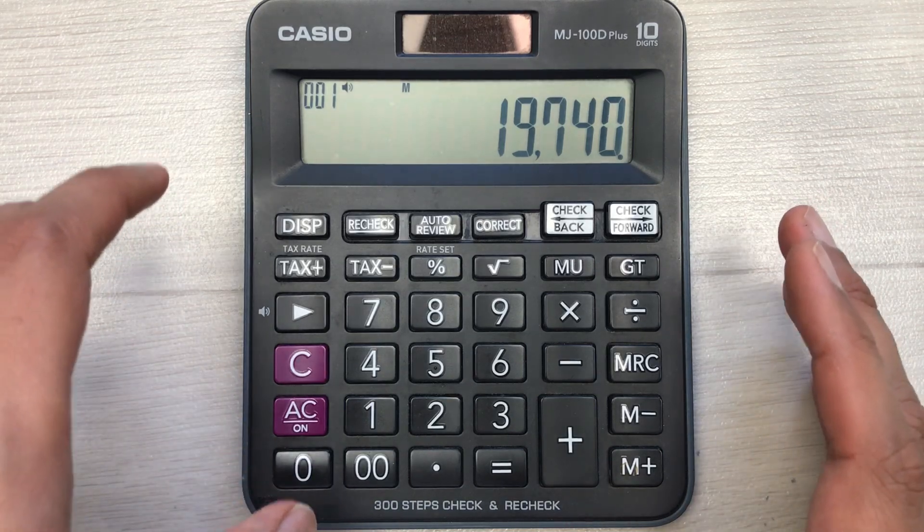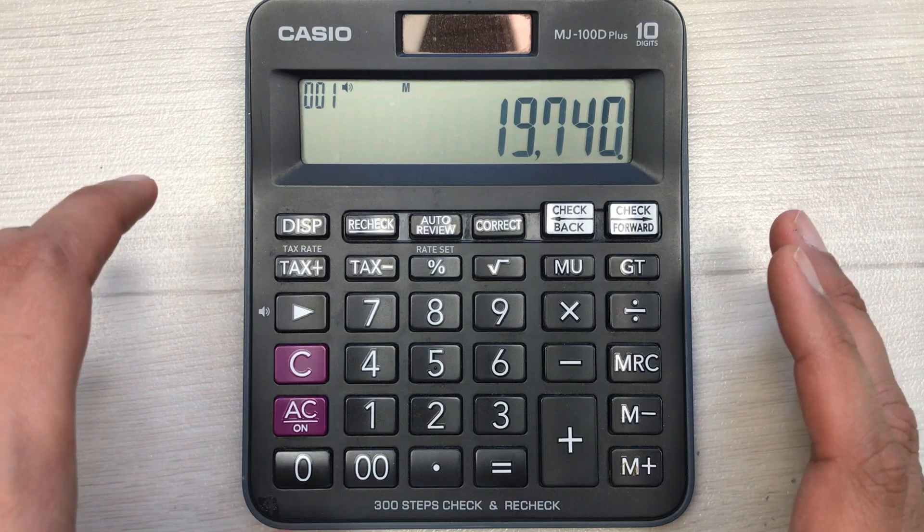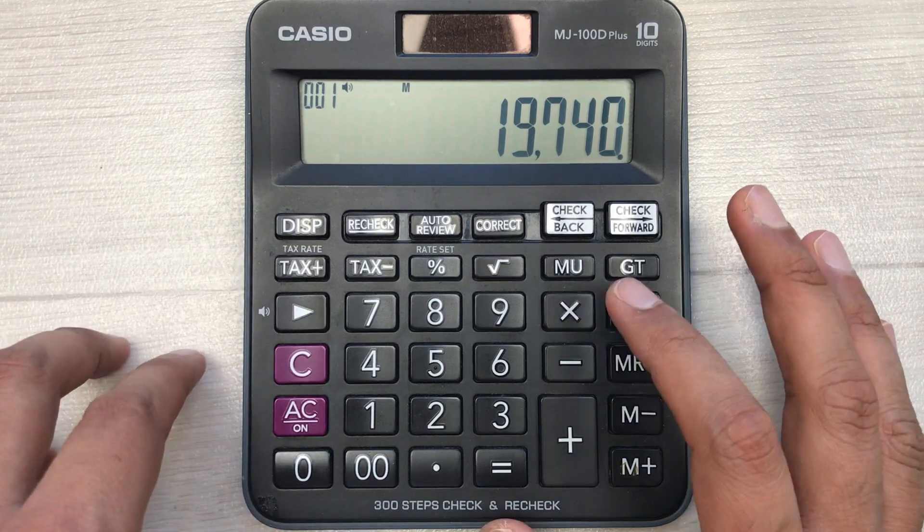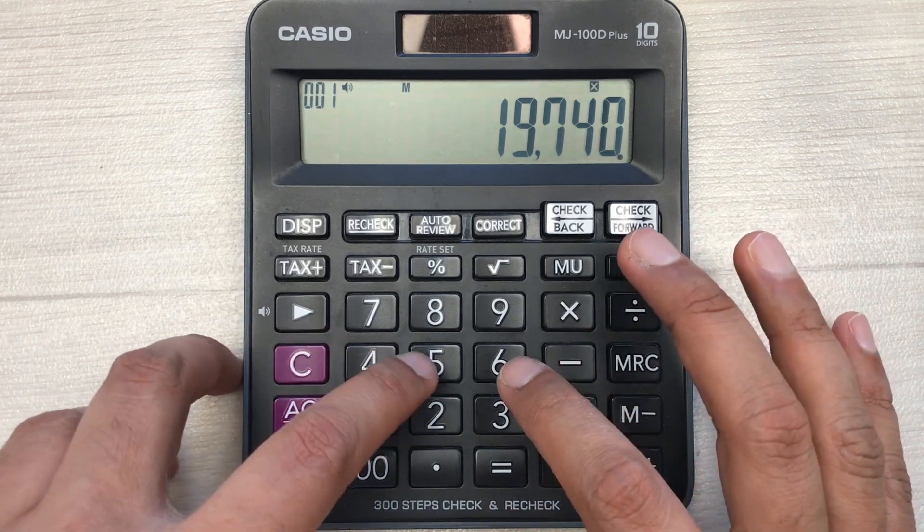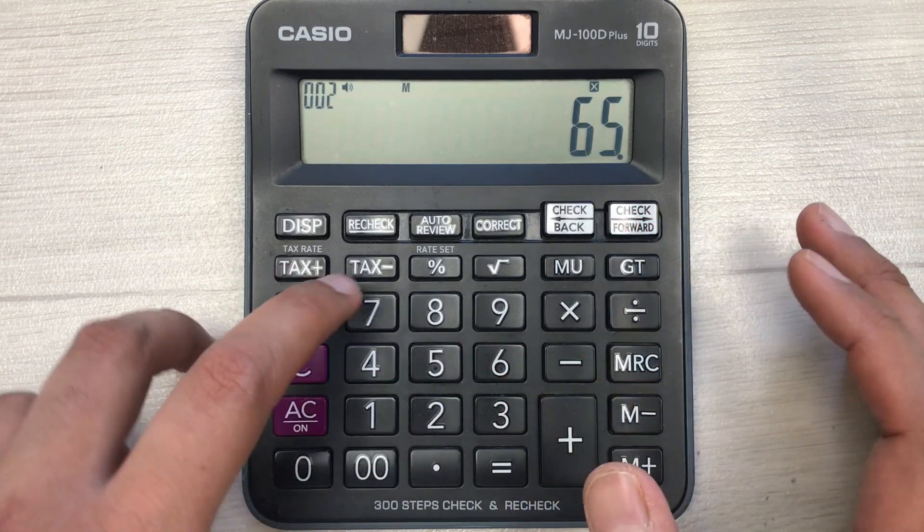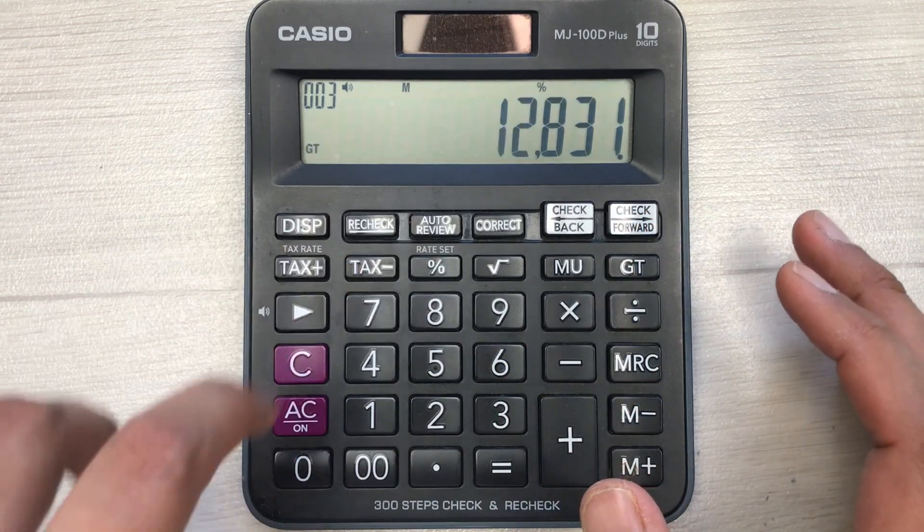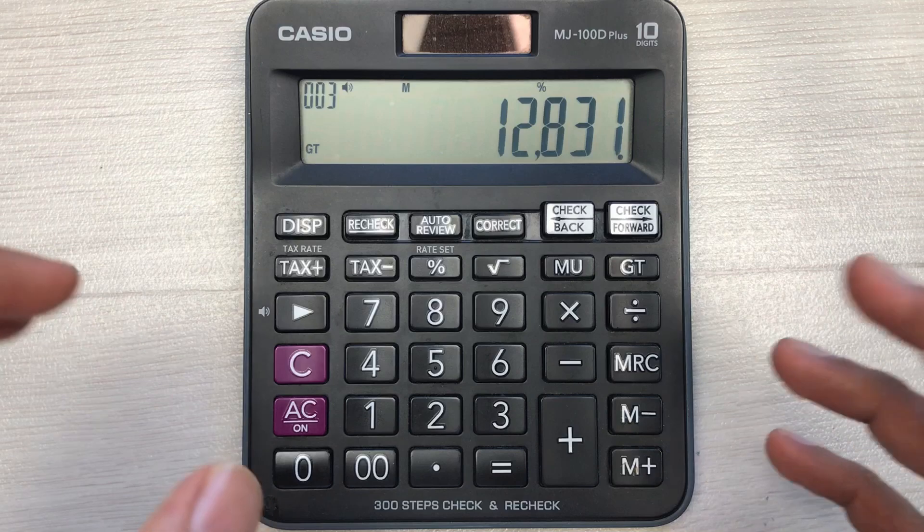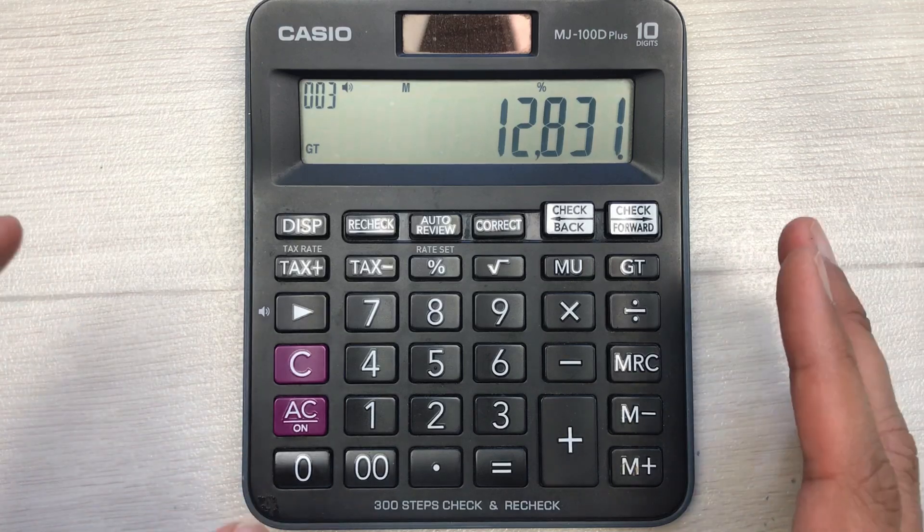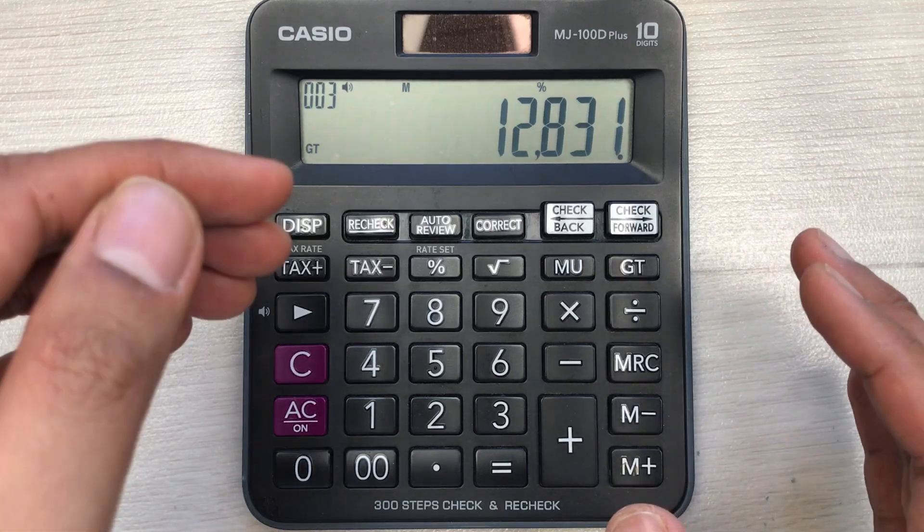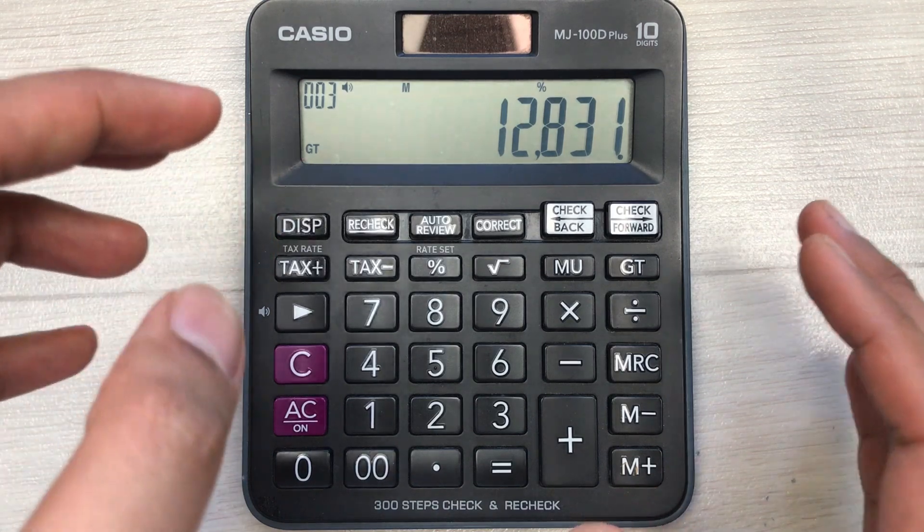Simply press this multiply button, then multiply it with 65, and then press this percentage button. Here is the final answer. So after 35% discount, 12,831 is the final amount.